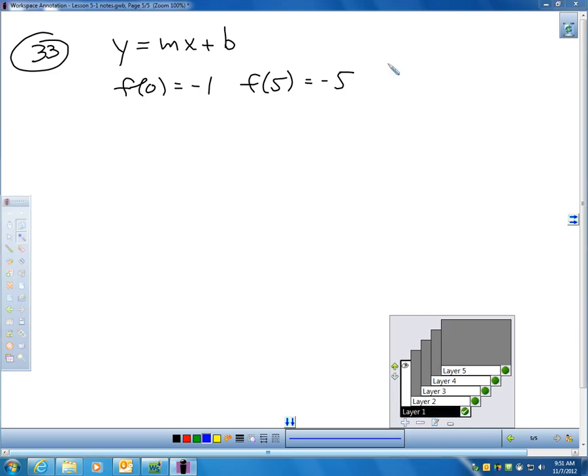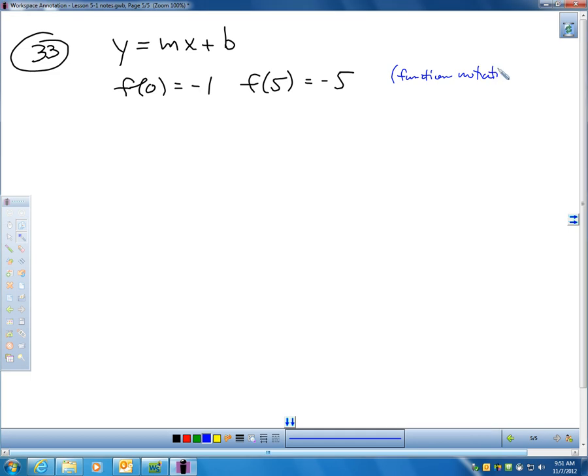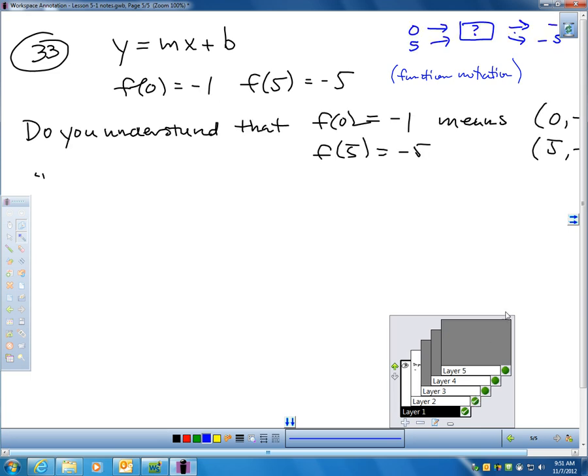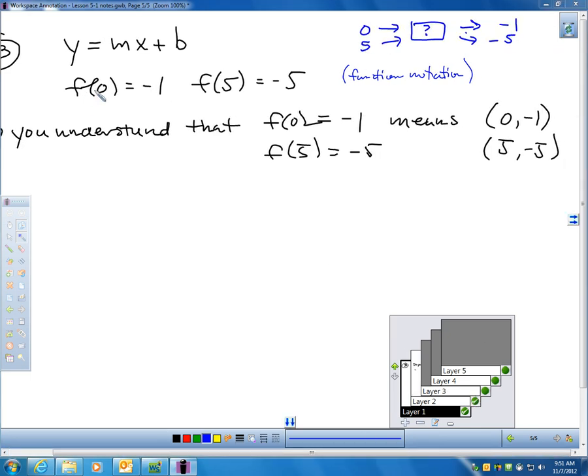Now, remember, this was called function notation. We learned about this in chapter 4. Function notation. Okay? So, when you see f of 0 equals negative 1, that tells me if I input 0 for x, y is negative 1.